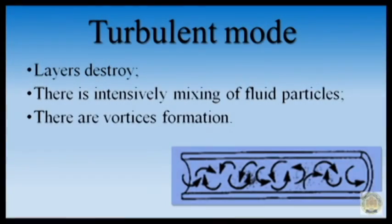If the tap is opened more, the flow rate increases. Some streams become wavy and in some places streams can break apart. If the flow velocity increases further, the colored stream in the pipe disappears. As a result, an intensive mixing of fluid particles takes place. Such motion can be called chaotic. This motion is the turbulent motion — from the Latin word 'turbulentus', meaning chaotic. There is a chaotic nature of fluid particle motion along different trajectories. Layers begin to destroy, fluid motion involves mixing, and there are velocity and pressure pulsations.